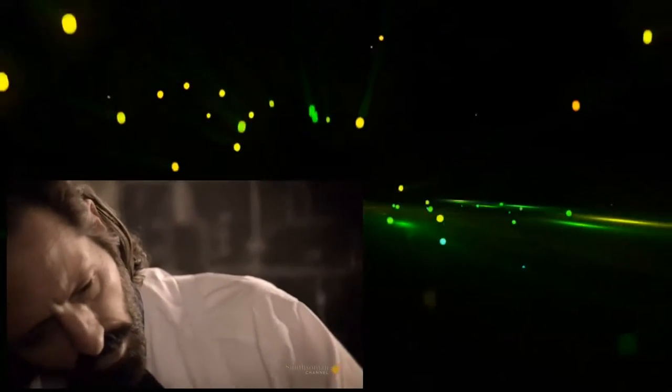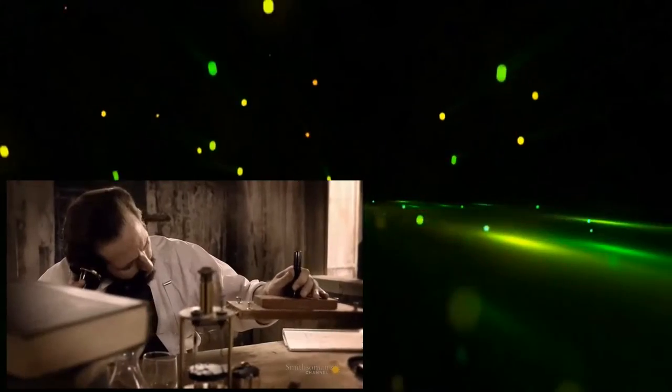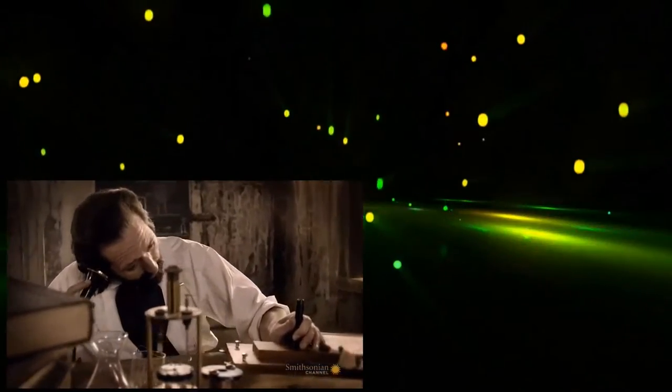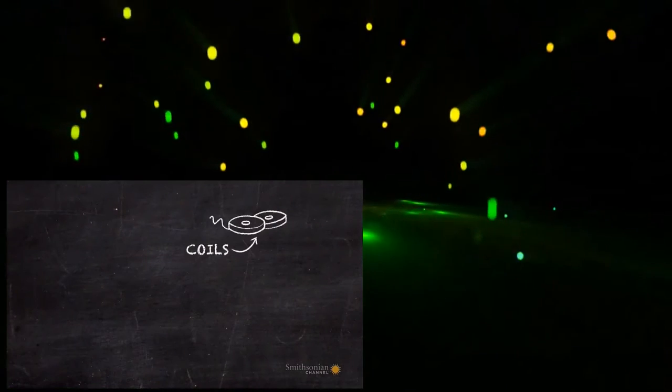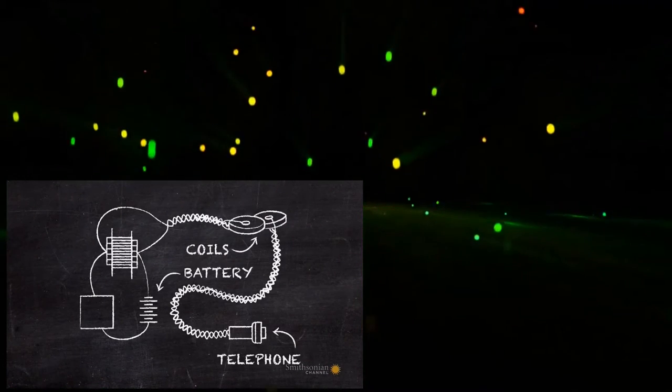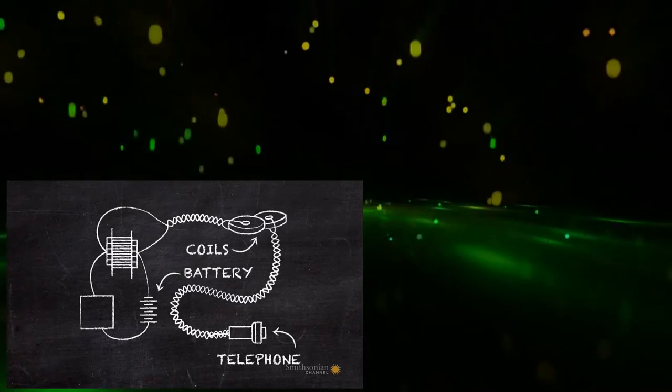His induction balance machine is supposed to cancel out interference on a telephone line. It consists of two wound coils.